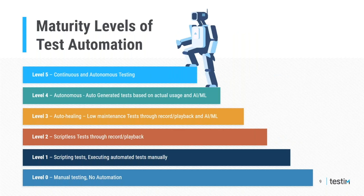The maturity levels of test automation start from 100% manual testing up to continuous testing where test cases are created autonomously based on application usage. In many cases organizations start at level one — writing scripts to execute tests and running them through a cron job or integrating with CI for continuous testing. Level two involves recording user interactions with the application and playing it back. In level three, script-based or scriptless tests are made immune to small UI changes using reinforced learning techniques in AI to locate elements even when few attributes have changed in the DOM.